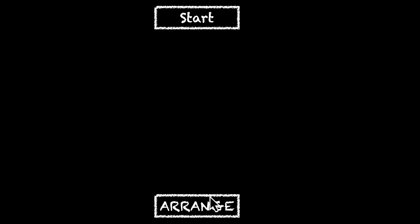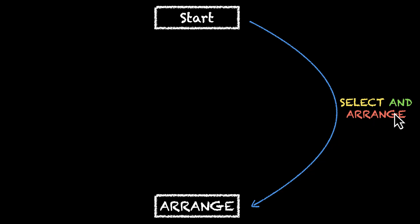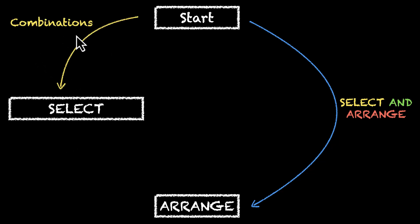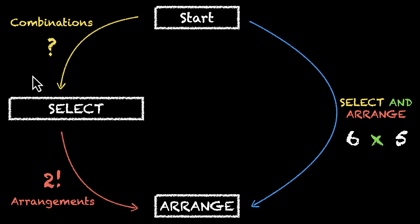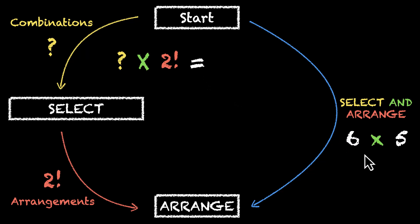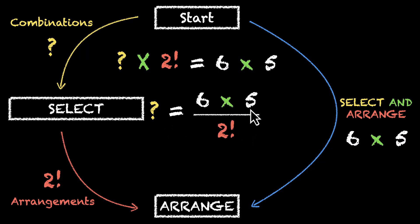There are two ways to reach from start to our finish line. We can either do both steps together — select and arrange two letters — or we can do this step by step: first select two letters, then arrange each selection to form our two-letter word. If we do this directly, we have six times five, that's 30 ways. If we have two letters and want to arrange them, we can do that in two factorial ways. So this question mark times two factorial equals six times five, that's 30. Therefore, question mark equals six times five divided by two factorial, that's 30 divided by two, that's 15 ways. This means there are 15 combinations of two letters.